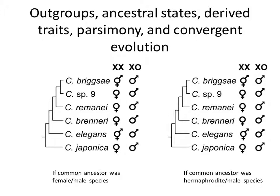Just for a quick review summary: on the left we had a tree where the common ancestor was assumed to be female, and on the right the ancestor was a hermaphrodite. Way back in time, any individual with two X chromosomes on the left was assumed to be a female, and on the right the starting position was a self-fertile hermaphrodite. What vocabulary term would we use to describe that trait? Is that ancestral or derived? It's back in the past — so these are examples of ancestral traits.